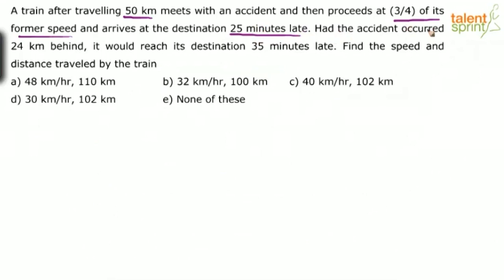Had the accident taken place 24 kilometers behind — meaning at 26 kilometers instead of 50 — the train would have reached the destination 35 minutes late. So we need to find the speed and the distance traveled by the train.